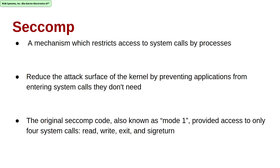Seccomp was added as a mechanism to restrict access to system calls by processes. The problem with the system call API is that it presents a wide attack surface, and like any other system, there are bugs in system call APIs. The privileged nature of the kernel means bugs can be exploited via the system call API. Reducing the kernel's attack surface by preventing applications from making system calls they don't need can help avoid those attacks.